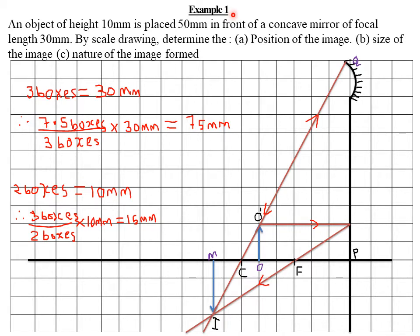Today we are looking at graphical construction of ray diagrams. The example reads: an object of height 10 millimeters is placed 50 millimeters in front of a concave mirror of focal length 30 millimeters. By scale drawing, determine: (a) the position of the image, (b) the size of the image, and (c) the nature of the image. We are dealing with a concave mirror — the outer side is highly silvered while the inner side is the reflecting surface.